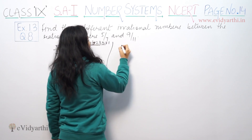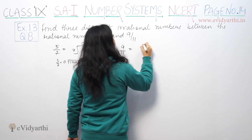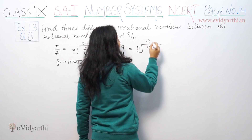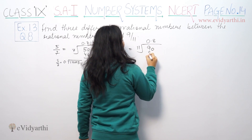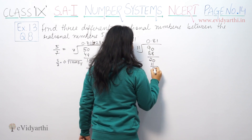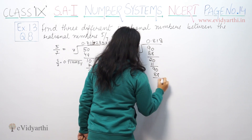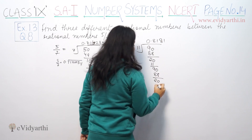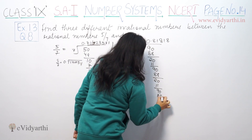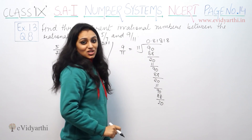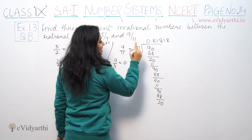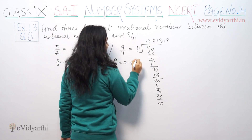Now let's find the decimal expansion of 9 by 11. Dividing 9 by 11: 11 eights are 88, 11 ones are 11, again 11 eights are 88, and 11 ones are 11. The decimal expansion is 0.81, with 81 repeating.